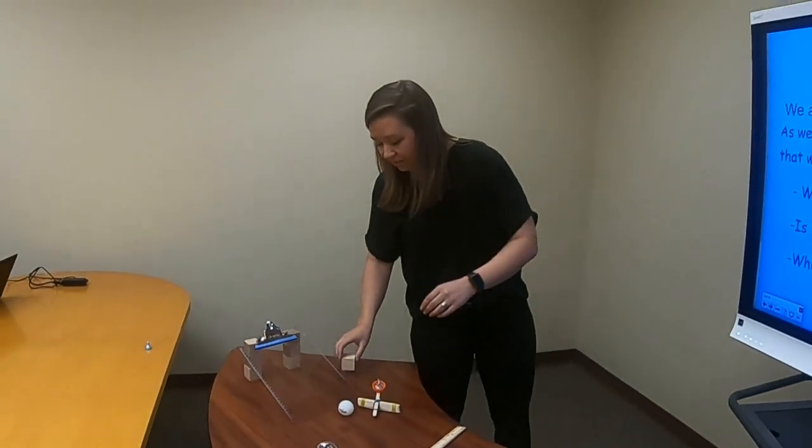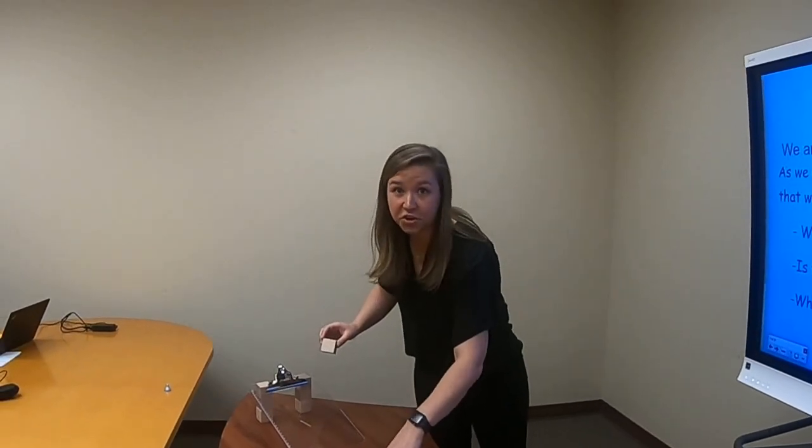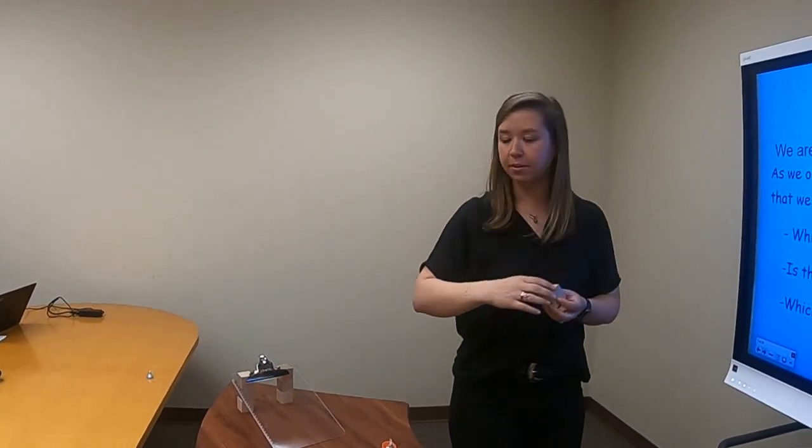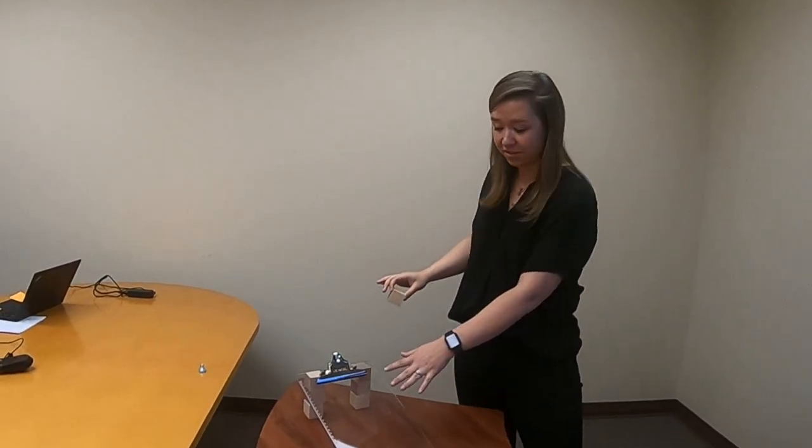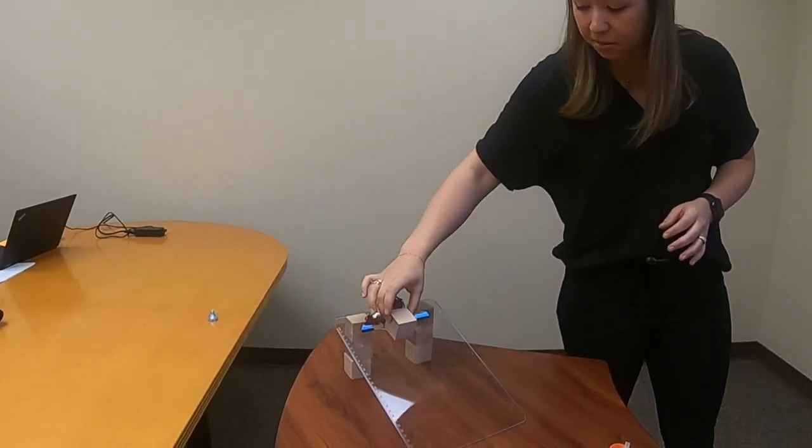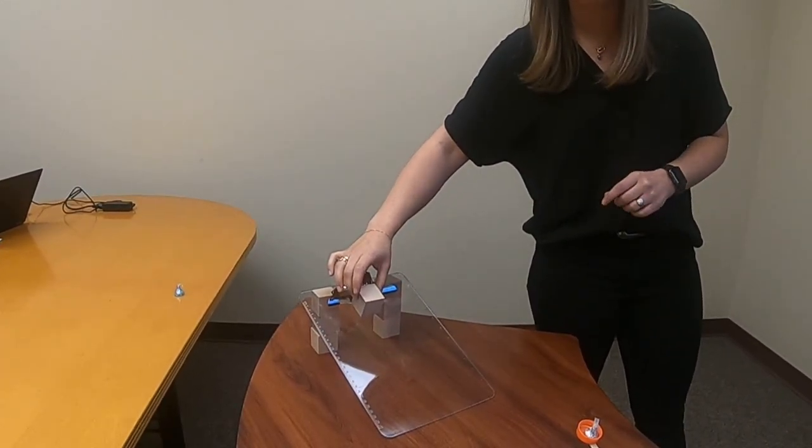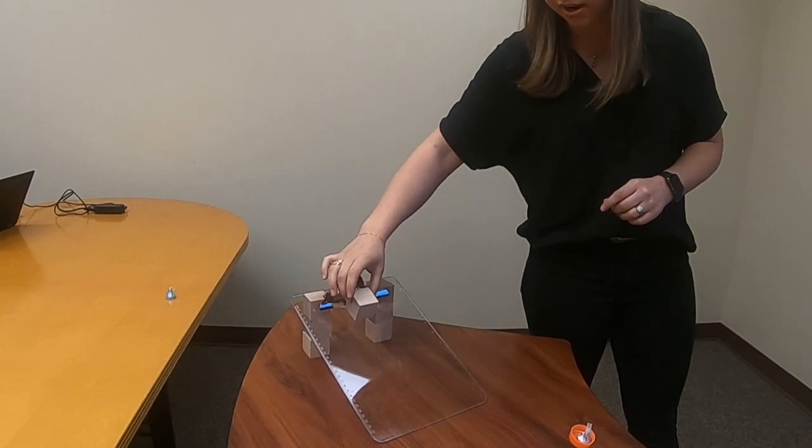My next object is a ramp. And you might have seen a ramp before. Sometimes we drive up ramps. Sometimes we drive down ramps. But right here, I have a ramp made out of a simple clipboard and some blocks. And I'm going to put my block at the top of my clipboard. And when I let it go, I want you to watch the motion. Are you ready?